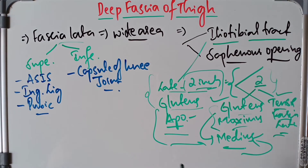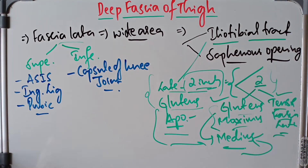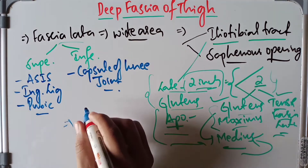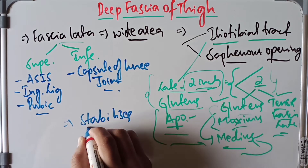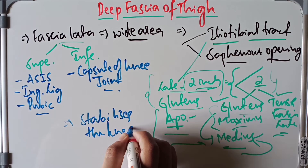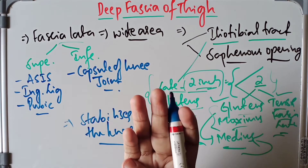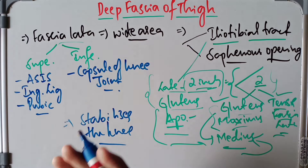What is the clinical significance of the iliotibial tract? It stabilizes the knee in both extension and partial flexion of the knee joint. It is also a main support for the knee against gravity when you are trying to bend the knee.